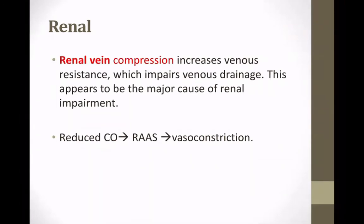The effect on the renal system is thought to be primarily through renal vein compression. Reduction in venous drainage leads to a drop in GFR and renal impairment. A second theory is that reduction of cardiac output leads to over-activation of the RAAS system and vasoconstriction, with the final outcome being a drop in GFR.